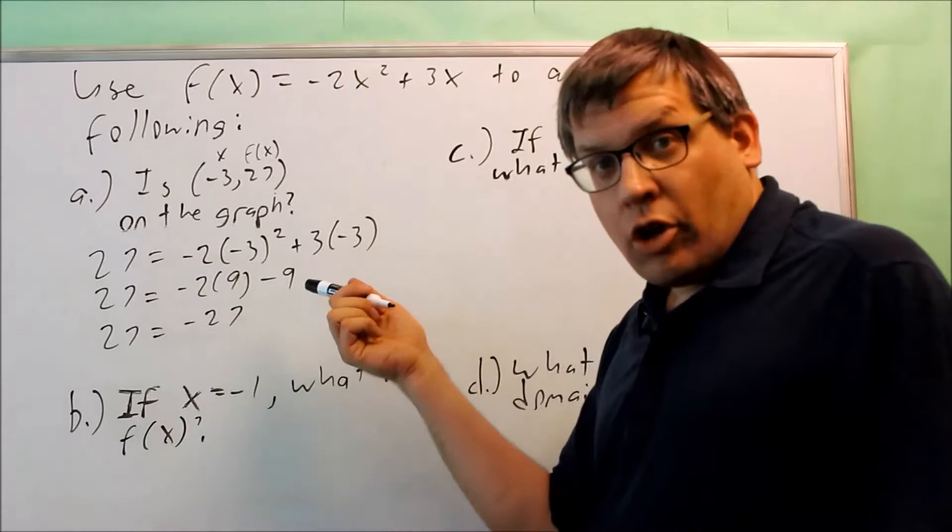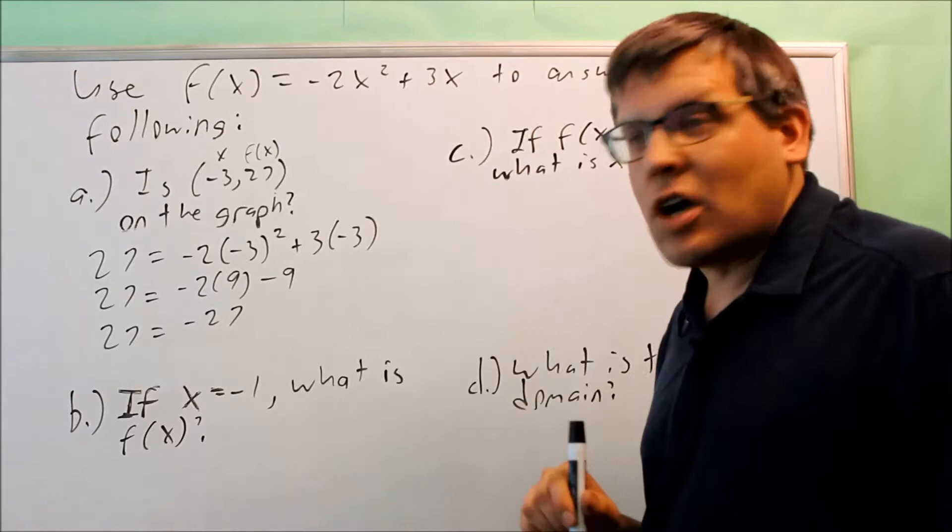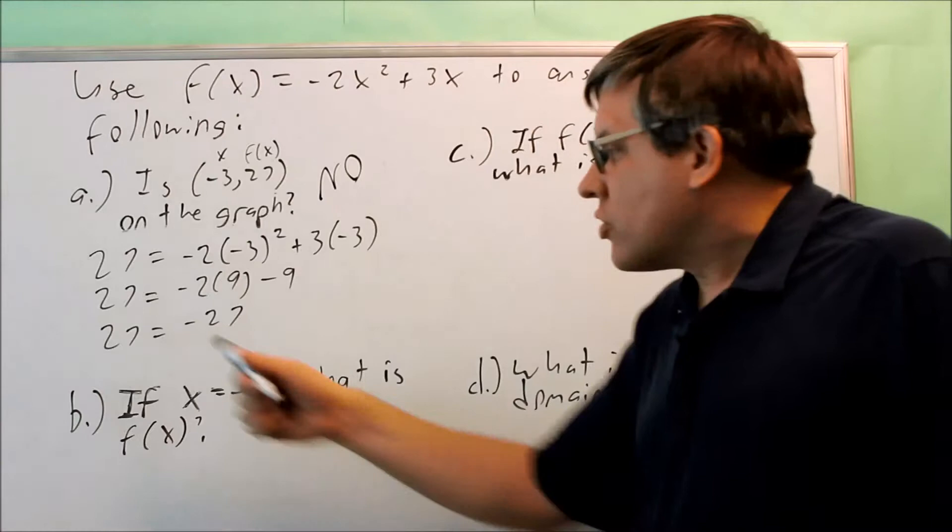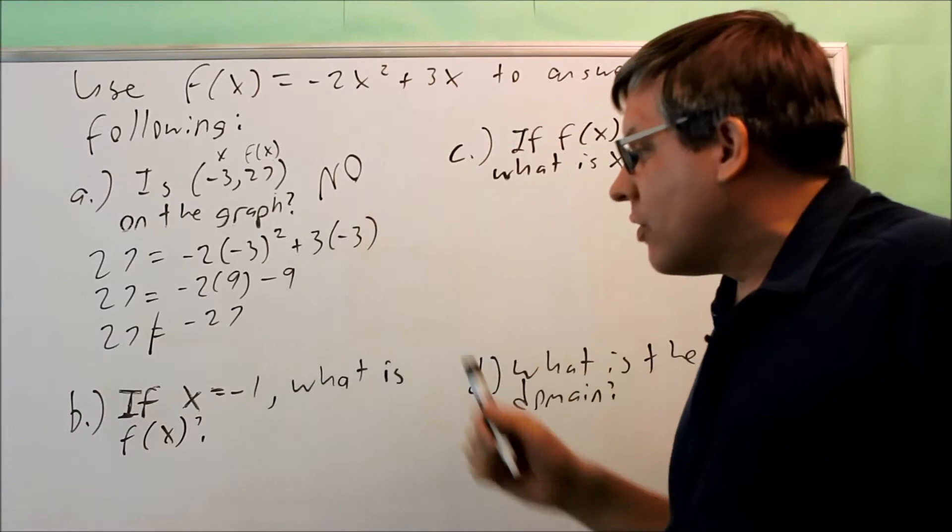These numbers are not the same, even though they're close, 27 and -27, but they have to have exactly the same number, same sign as well. So because of that, not the same, I'm going to say it's no. These are not equal to each other. Therefore, it's not on the graph.